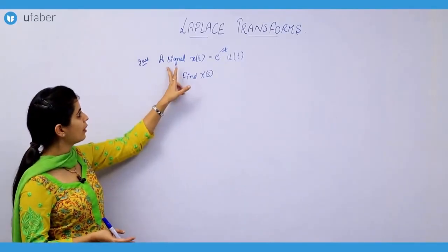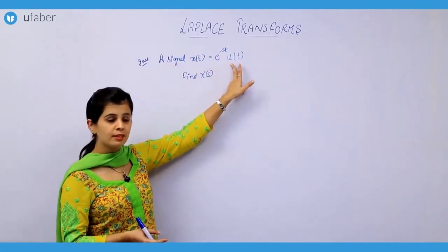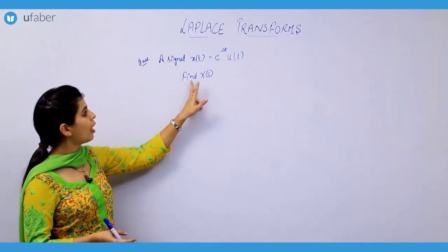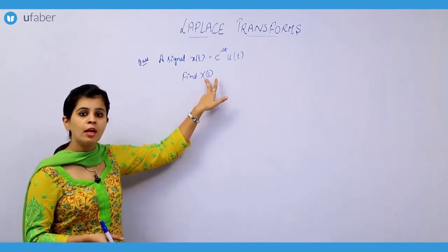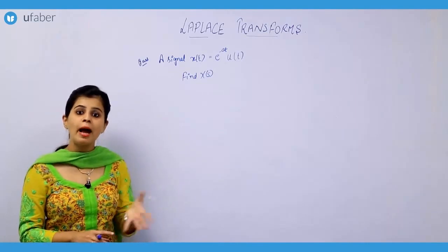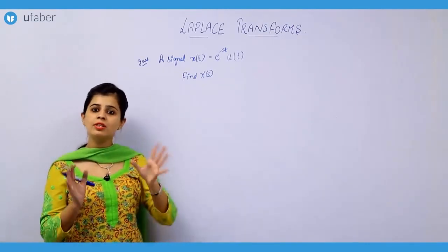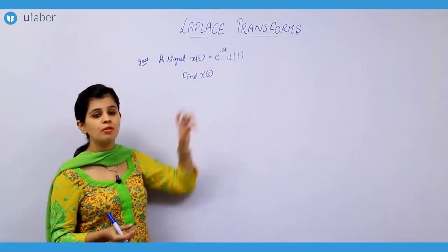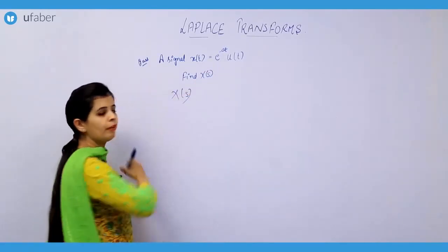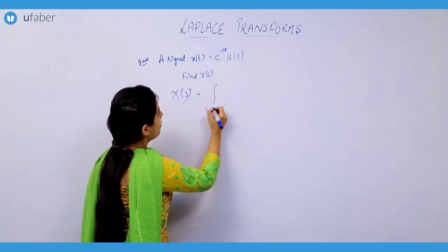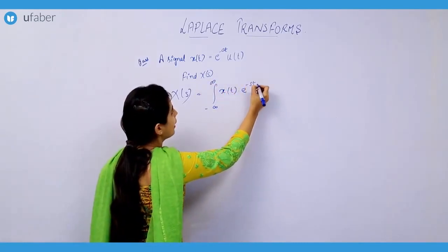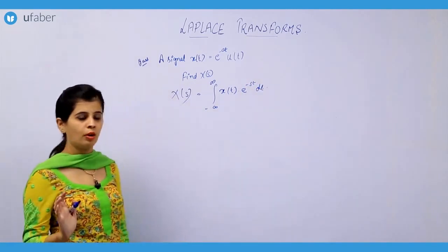You can see that this is one question here — a signal x(t) is given as an exponential function, and you have to find out the value of X(s), that means the Laplace transform. You also have to find out the region for which this Laplace transform exists. We start with the definition: the Laplace transform is given by the integral from minus infinity to infinity of x(t) e raised to the power minus st dt.